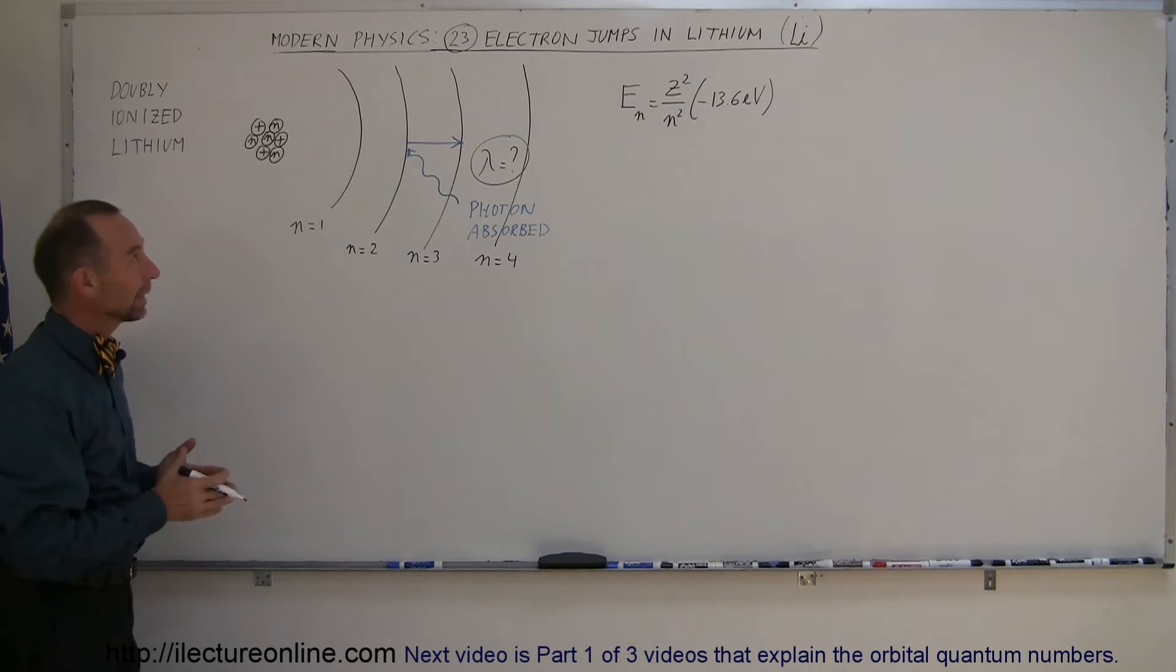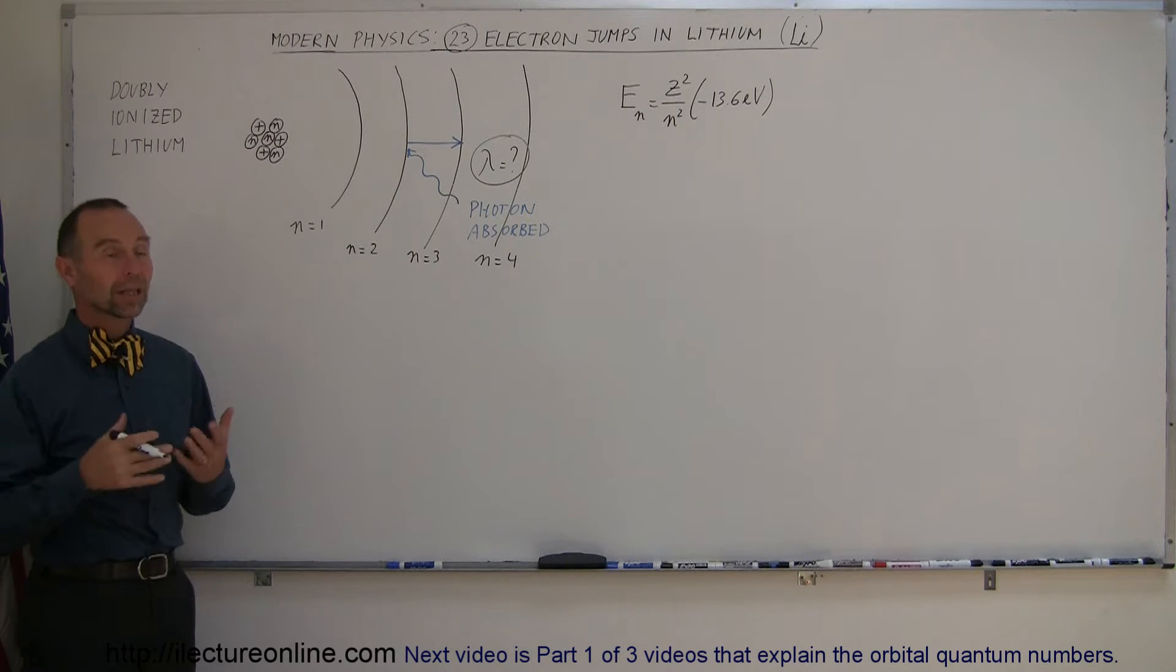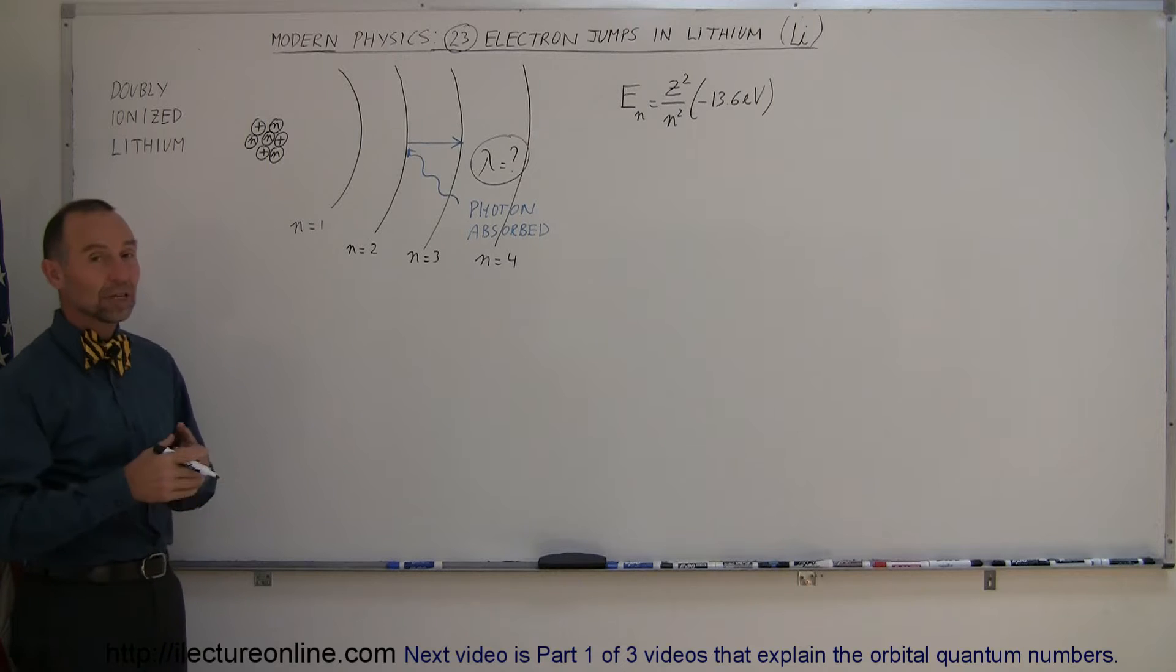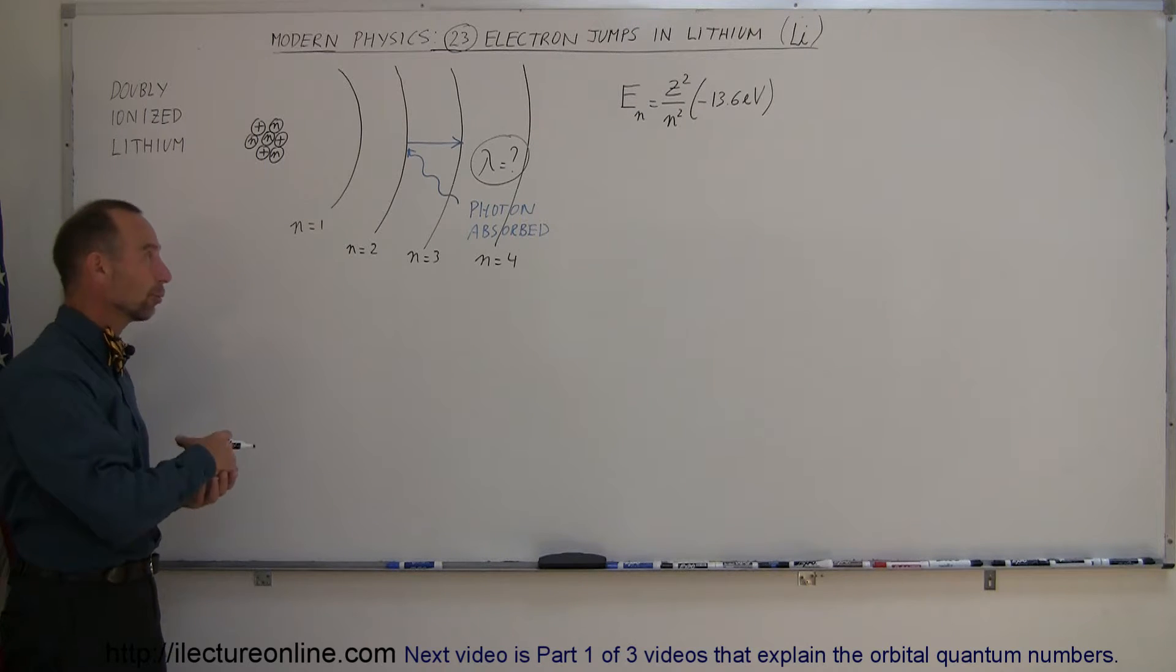To make sure we have a complete understanding of how to deal with electron jumps and the associated photons being either absorbed or emitted, we're going to look at a lithium atom.